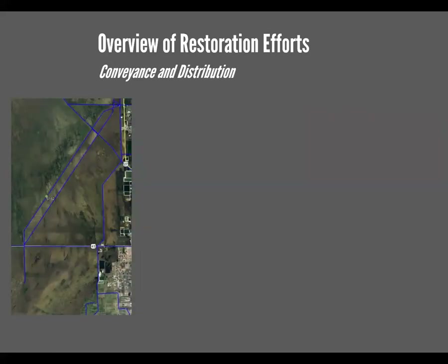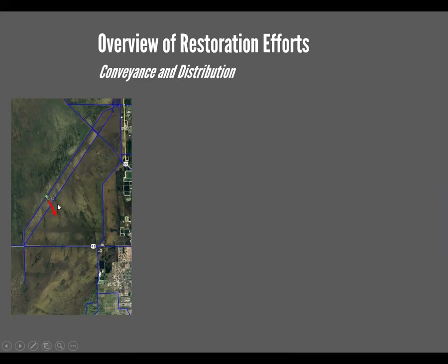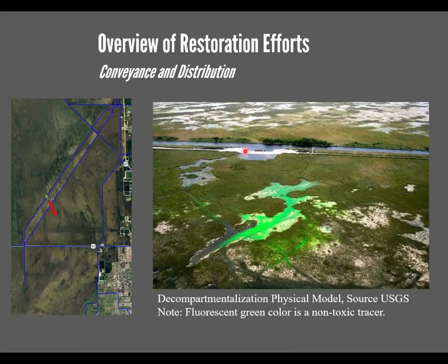Another conveyance project is the decompartmentalization physical model. The physical model helps us understand how the ecosystem responds to decompartmentalizing it. With all those canals, levees, and dikes, we've essentially made pockets within the ecosystem. The S-152, for instance, is essentially a structure through the levee. Here's a picture of it — the levee, the structure, and there's a canal there. Here's a picture of some fluorescent dye that was released to understand the flow pattern from this structure flowing essentially southeast in the direction of the area.